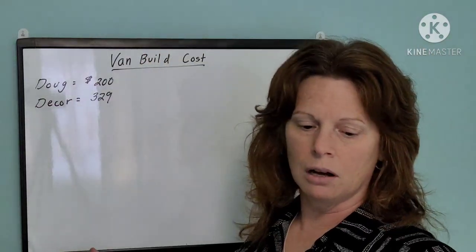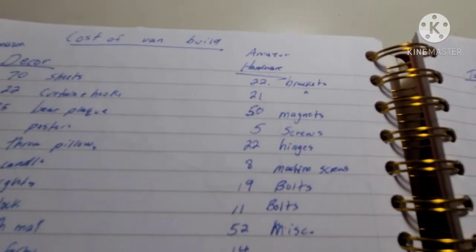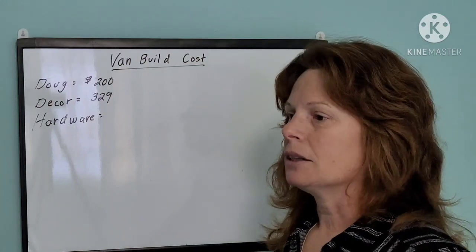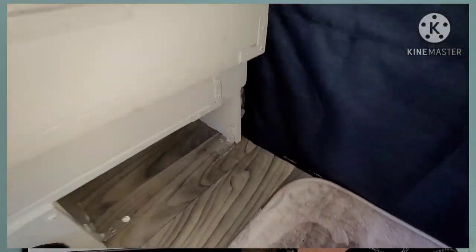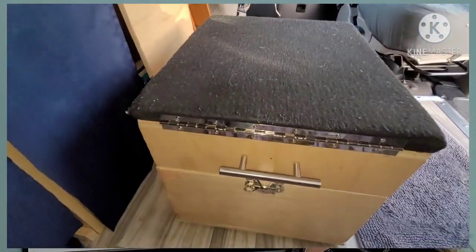The next category I'm going to call hardware, et cetera. So obviously that's like brackets and screws and the window sash lock, stuff like that. So the total for that is about $286.